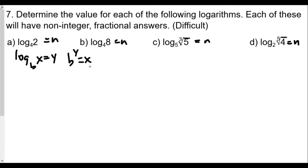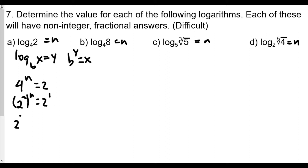So we see here the base would be four, and four to the nth power is equal to two. We want to rewrite them so they have the same base, so we write four as two squared. We have two squared raised to n equals two, or two to the 2n equals two to the first. When the bases are equal, the exponents must equal each other as well, so our equation will be 2n equals 1, or n equals one half.